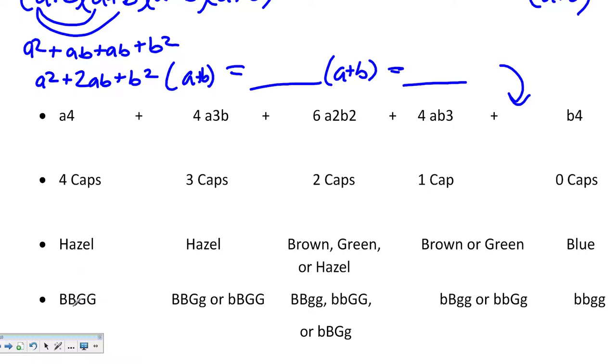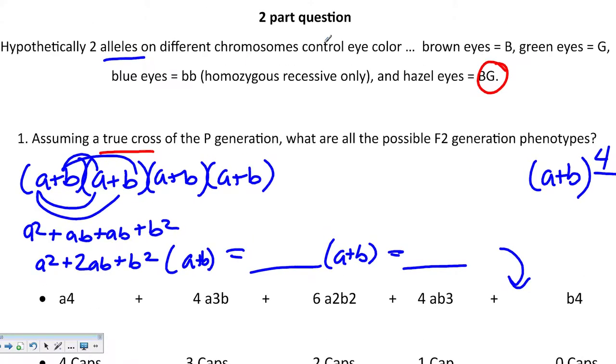Remember that big B and big G means that you're going to have hazel eyes. So this will have hazel eyes, we'll have hazel eyes once again here, and once again here. We will not have hazel eyes in any of the other offspring.